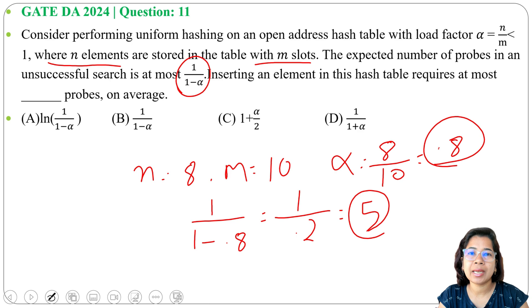So if we are searching an element in a hash table having 10 slots then for unsuccessful we need to search 5 times. If after 5 times we are not getting it then we will say it's an unsuccessful search, that element is not present in that hash table.